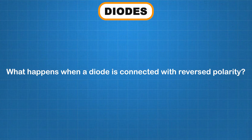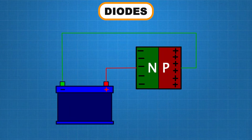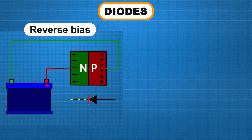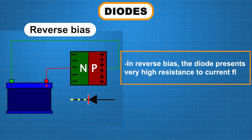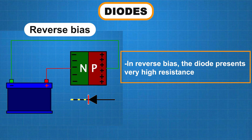But what happens if we reverse the battery? If the positive terminal of the battery is connected to the N-type material, the electrons are pulled away from the junction toward the positive terminal of the battery. No electrons cross the junction, and no current flows through the diode. This condition is called reverse bias. Since current cannot flow without electrons moving across the junction, the diode presents high resistance, effectively blocking the current.